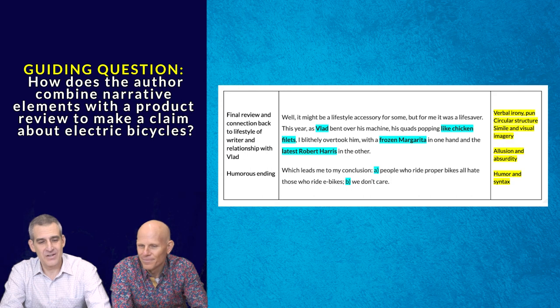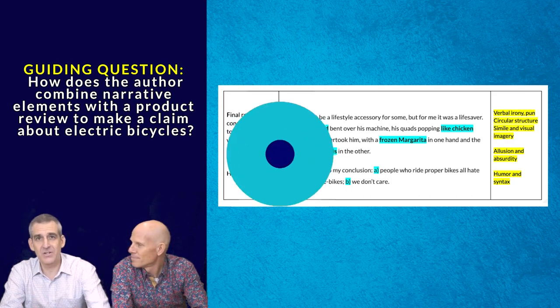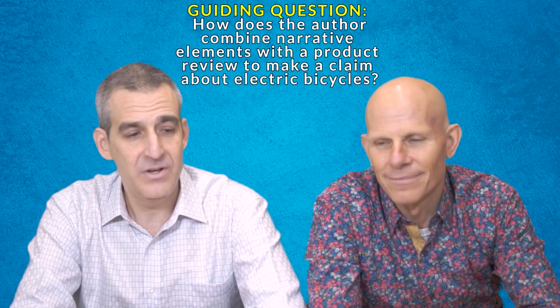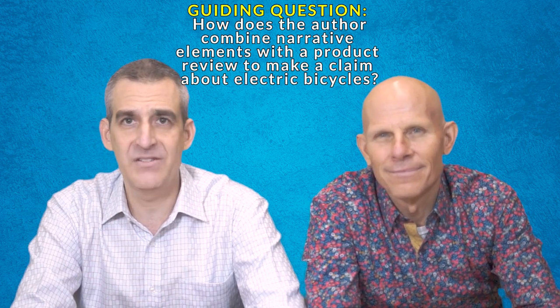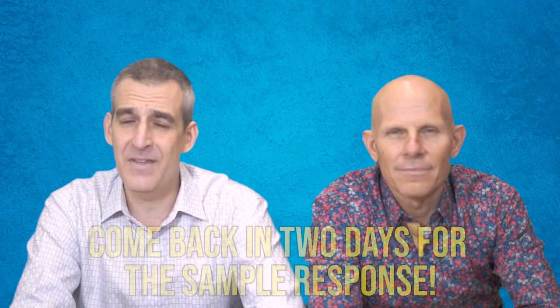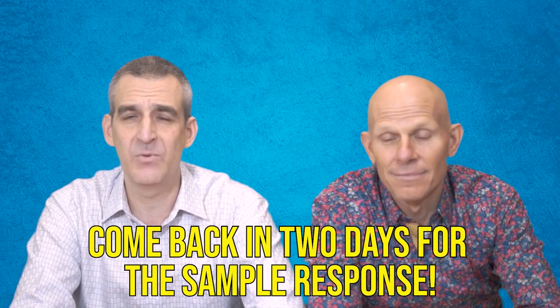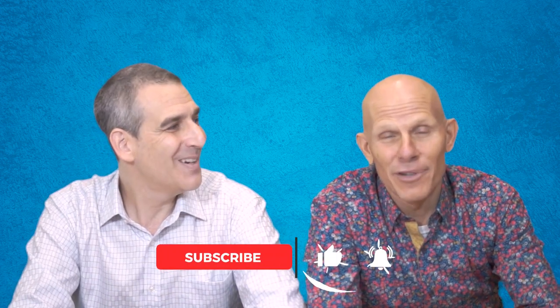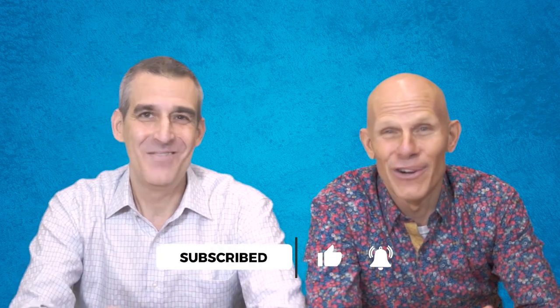It's a really cool text, Mr. Giles. It really combines two text types. So folks, in closing, we'd like you to think about that guiding question. How does the author combine narrative elements with the product review to make a claim about electric bicycles? We recommend you try to answer this question. Set yourself a timer, the correct time that you have to write, and then come back in two days. We'll go over a sample response and you can see how you did. In closing, just to my cycling friends, I will never buy an e-bike, but I love this article. I like e-bikes. Take care, everybody. Bye-bye.